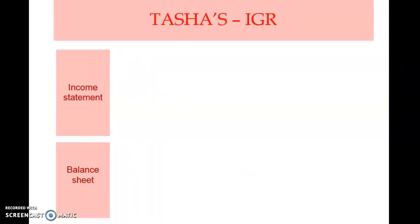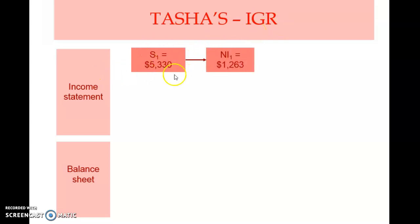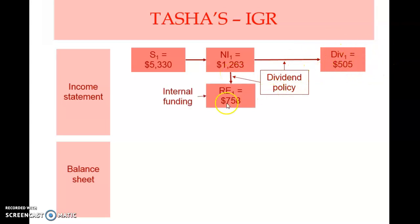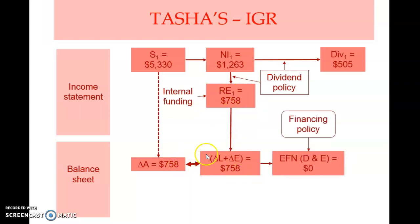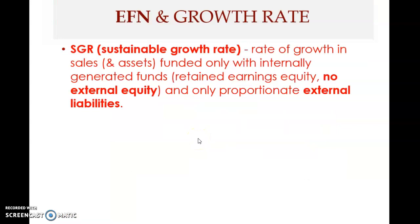Looking at the same Tasha Toy Emporium example with IGR: the change in sales grows only at the internal growth rate, not at 10%. Net income increases accordingly; with a 40% dividend payout, 60% is retained — approximately 758 dollars. The change in assets equals 758, and the change in liabilities and equity is exactly the same, completely funded by retained earnings. Therefore no external funding is needed.